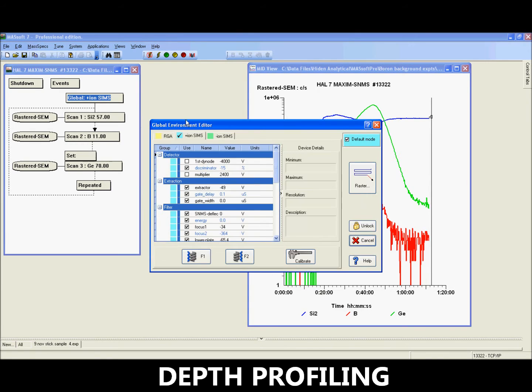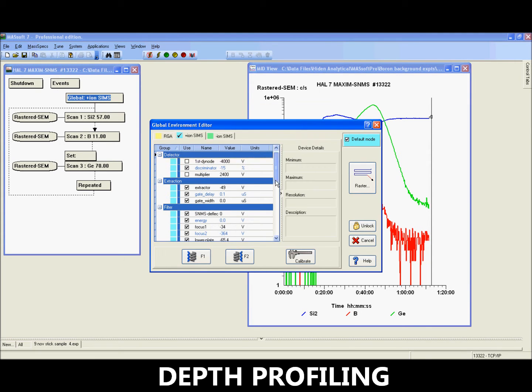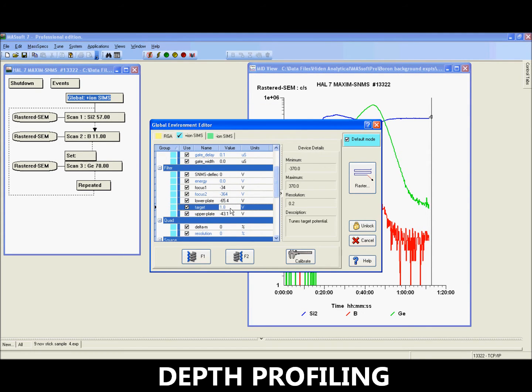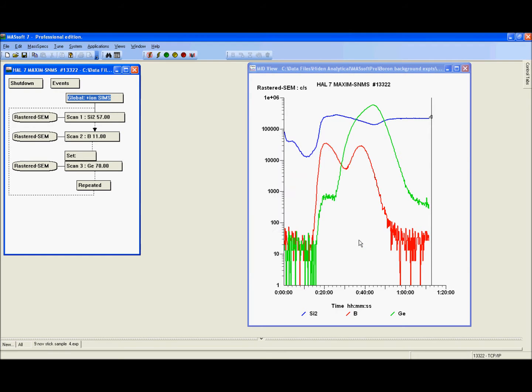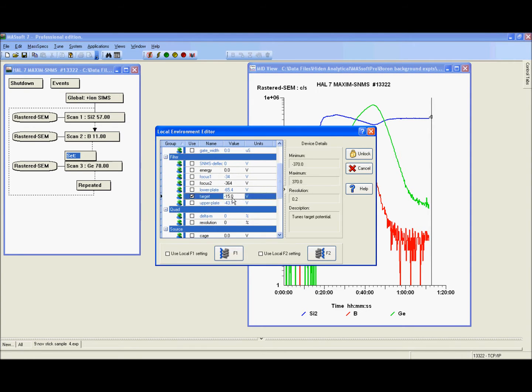The MassSoft suite also controls the rastering, gating, mass and acquisition rate through a flowchart interface. Most parameters, such as the target bias shown in this example, may be set for individual masses in the experiment.